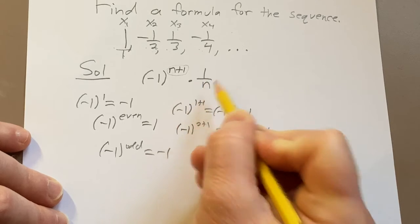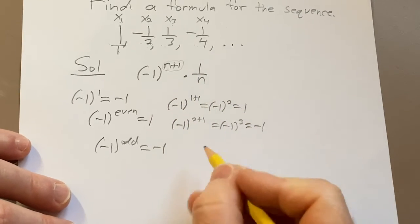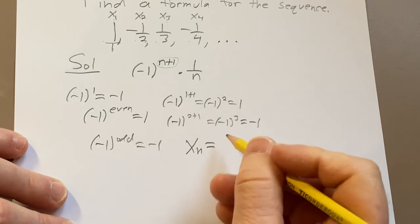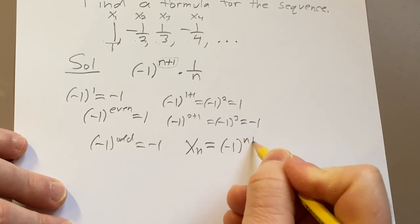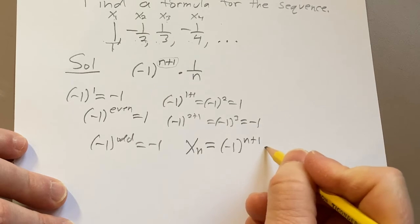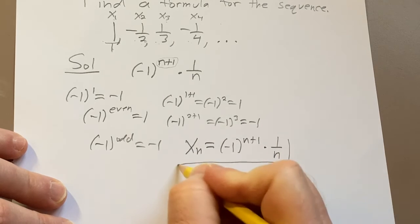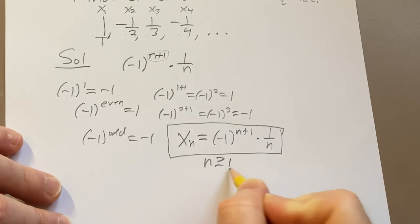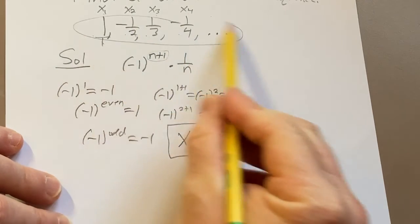We just do times one over n. So our formula for this problem is going to be x sub n equals negative one to the n plus one times one over n. And this formula is valid for n greater than or equal to one, and this should give us the sequence up here.